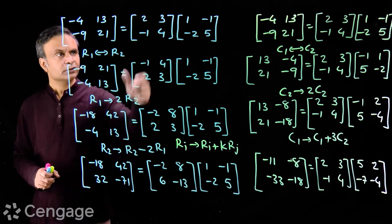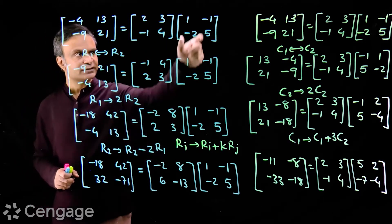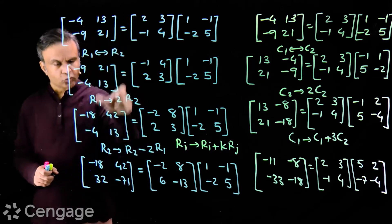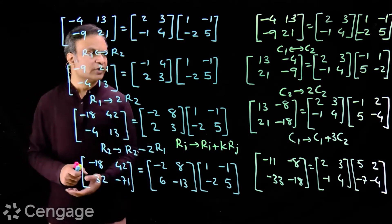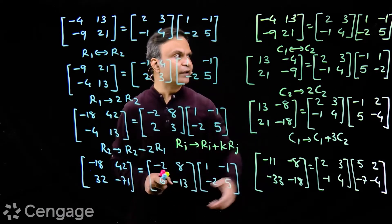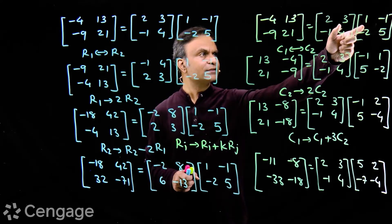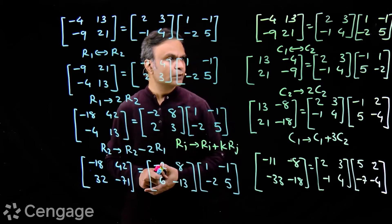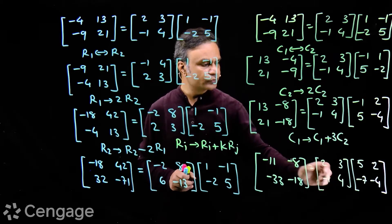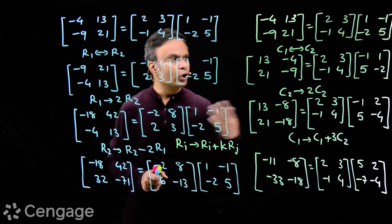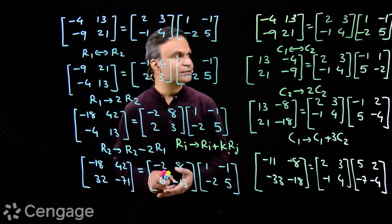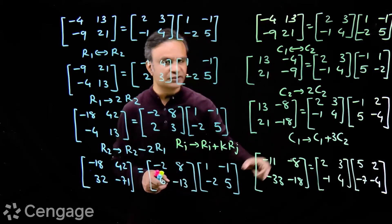On the RHS the first matrix is transforming, and the second matrix is intact — it does not change. Now here we have row transformation. We can also do column transformations, but we do column transformations in the post-multiplier. So here we have the product of these two matrices and this is their product matrix. I keep the pre-multiplier matrix intact, and we do column transformations in the post-multiplier matrix.